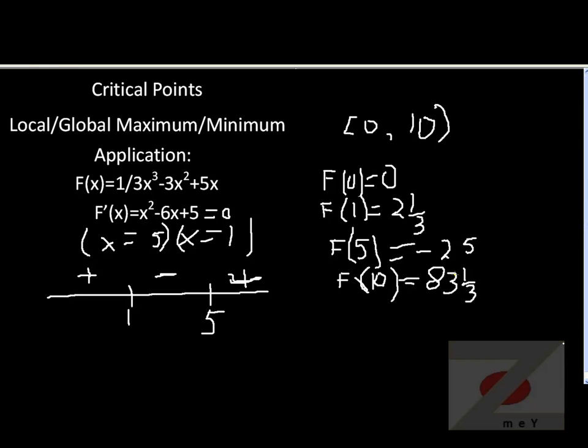From here, you can see that at 5, the function is the smallest. So the function looks something like that. At 0, it's actually 0. Then it's increasing because at 1 starts decreasing. It goes all the way to negative 25. And then it starts increasing again. And by the time it gets to 10, it becomes 83 and 1 third.